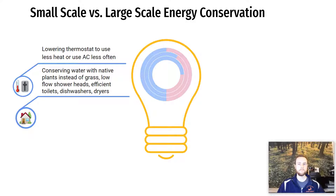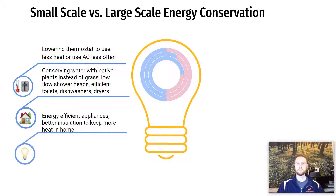Any way that you can conserve water is a way to conserve energy. We can also improve the insulation of our homes or improve the efficiency of our appliances. Some appliances are able to do the same task using less overall electricity. With better insulation, the heat generated by your furnace or heating system will stay in the home, and you'll have to use less overall energy. The same concept applies to cooling.